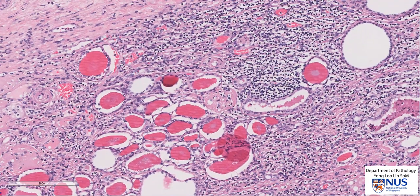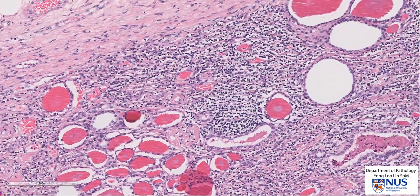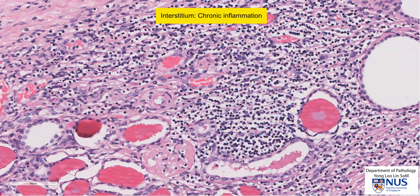If you look around these areas in the interstitium, you will also see a lot of chronic inflammatory cells, and most of these are lymphocytes. Interstitial chronic inflammation is another feature of end-stage kidney.